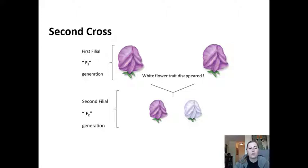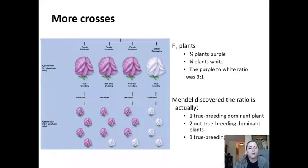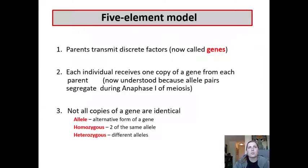He then crossed that F1 generation, and the resulting F2 generation had both purple and white flowers. Three quarters of those plants were purple-flowered and one quarter were white-flowered. When he allowed the F2 generation to self-pollinate, what he actually had was one true-breeding dominant plant, two non-true-breeding dominant plants, and one true-breeding recessive plant.